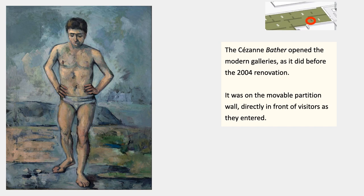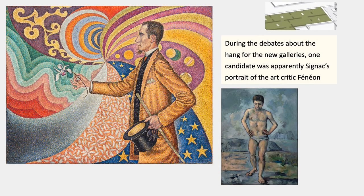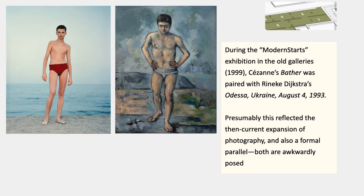There was a lot of debate before the Taniguchi building opened and during several rehangs about what could possibly be put in the place of this painting. This is their figure one — like figure one in an art history textbook. During one of those discussions, the curators entertained the possibility of putting in instead Paul Signac's portrait of the art critic Félix Fenion. It would have been a really interesting and eccentric choice — it certainly would have pointed past the kind of sober modernism that actually follows, and on toward postmodernism in an interesting way.